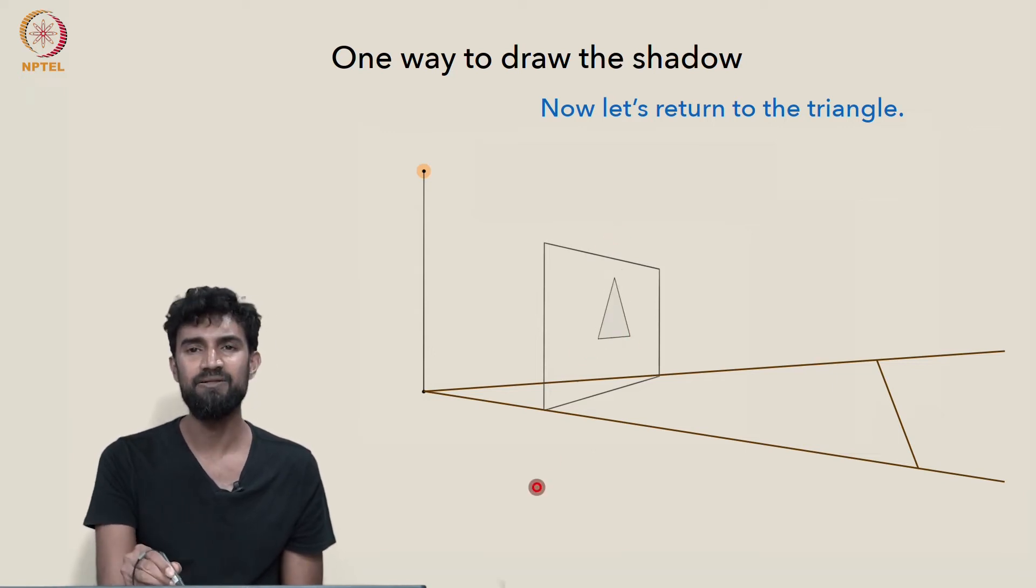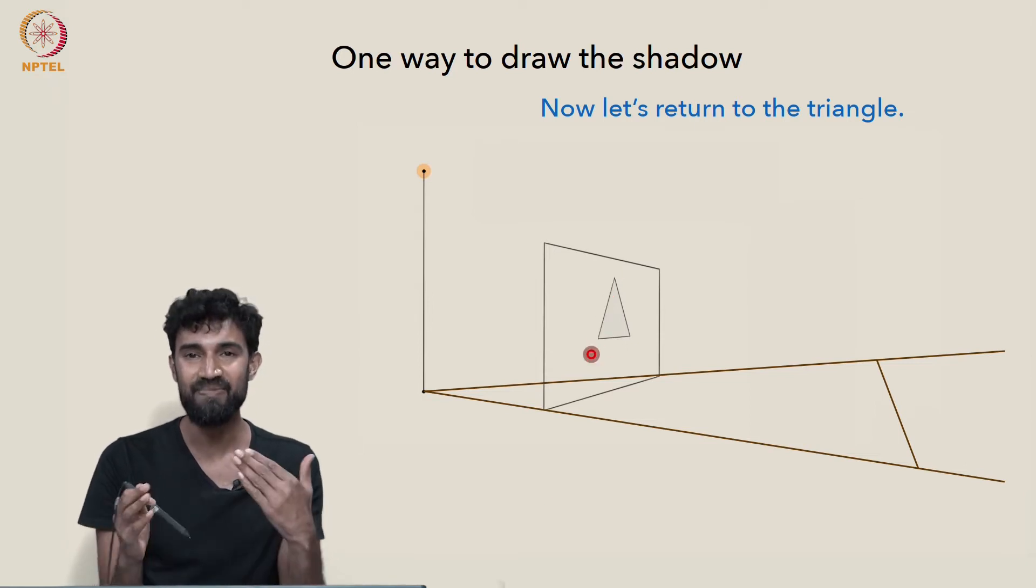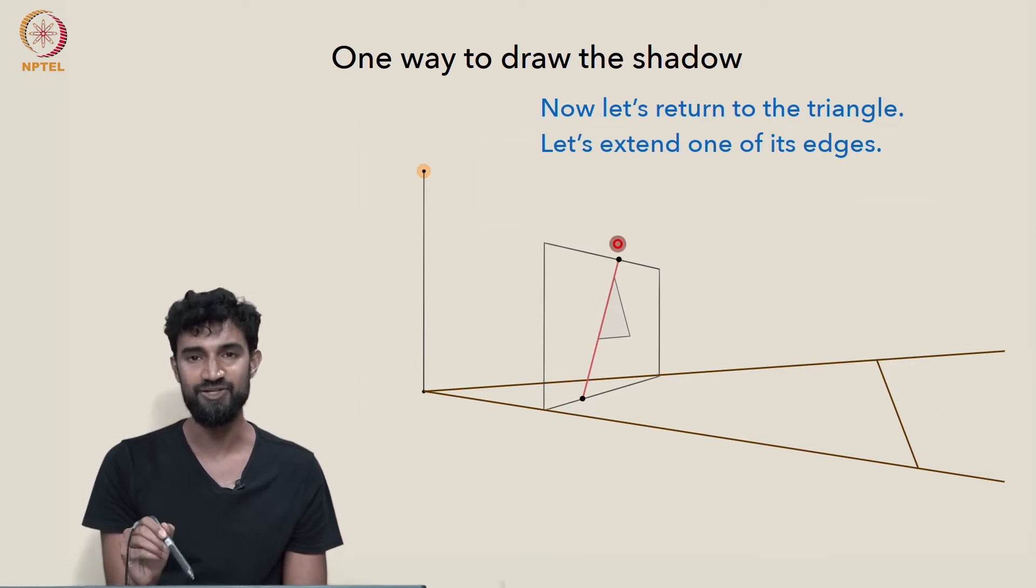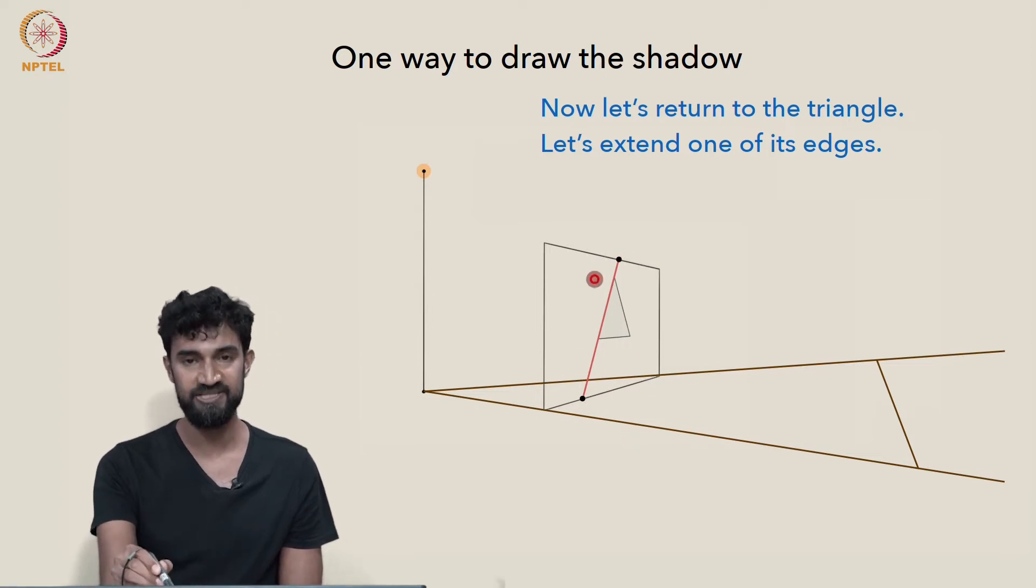So, let's extend them a little bit so that we can see where we can get some intersections which we can then work with. So, let's start by extending this edge of the triangle to where it hits the top and bottom of the sign board. So, that gives us two new points to play with.